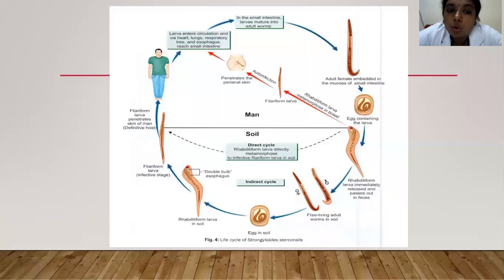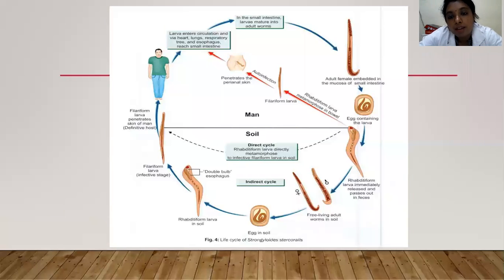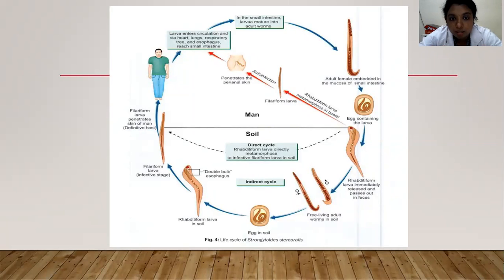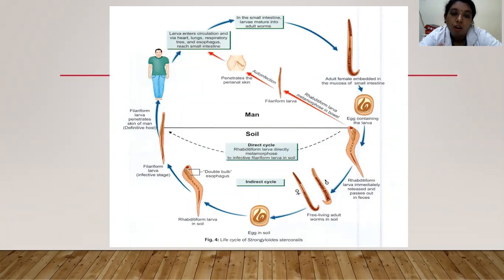The larvae enters the circulation via the heart, lungs, respiratory tree, and esophagus, then reaches the small intestine where it matures into the adult form. The particular feature of Strongyloides is that rhabditiform larvae may metamorphose into filariform larvae directly inside the intestine rather than in the soil, then penetrate the perianal skin, enter the circulation, and the cycle repeats — this is known as auto-infection or internal reinfection inside the same host.